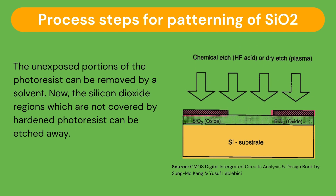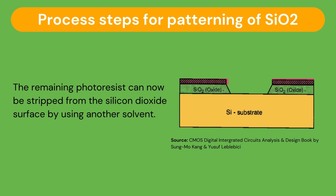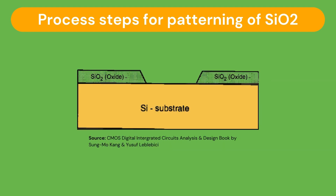Following the ultraviolet exposure step, the unexposed portions of the photoresist can be removed by a solvent. Now we have the silicon dioxide regions that are not covered by the hardened photoresist visible, and they can be etched away by either using a chemical solvent like hydrofluoric acid, or by using a dry etch such as a plasma etch. At the end of this step, we obtain an oxide window that reaches down to the silicon substrate surface. The remaining photoresist can then be removed by another solvent, leaving the now patterned silicon dioxide layer on the surface of the silicon substrate.